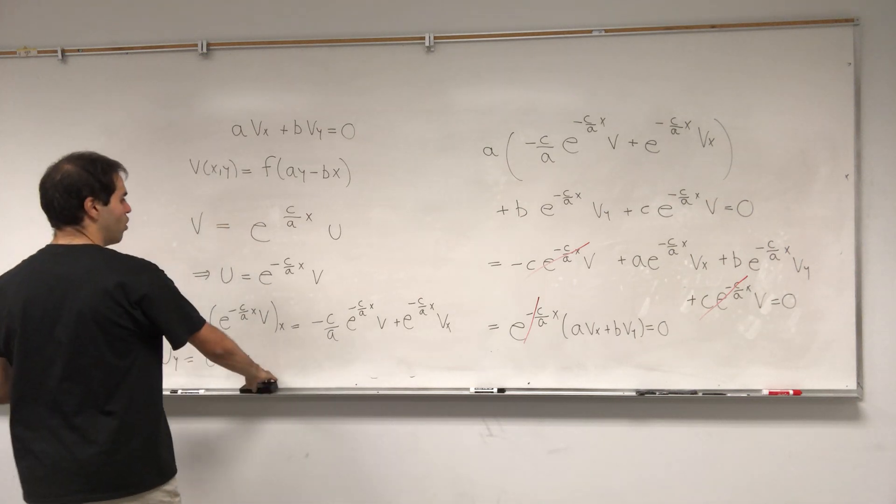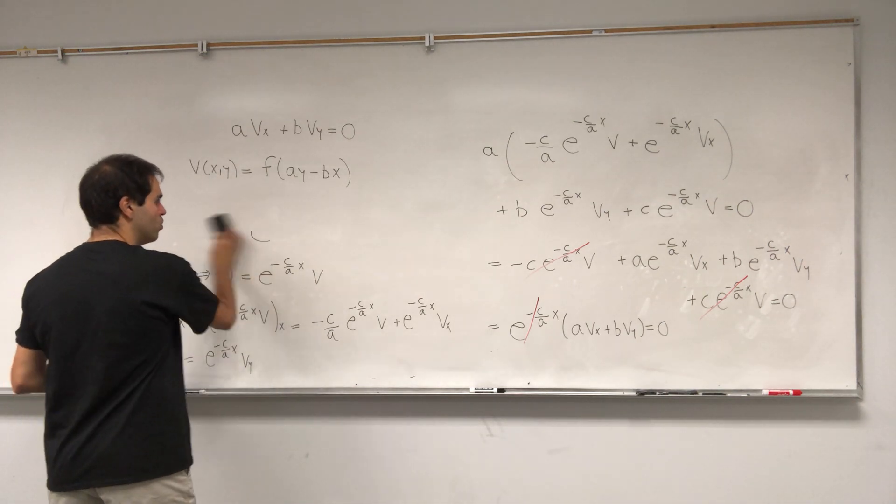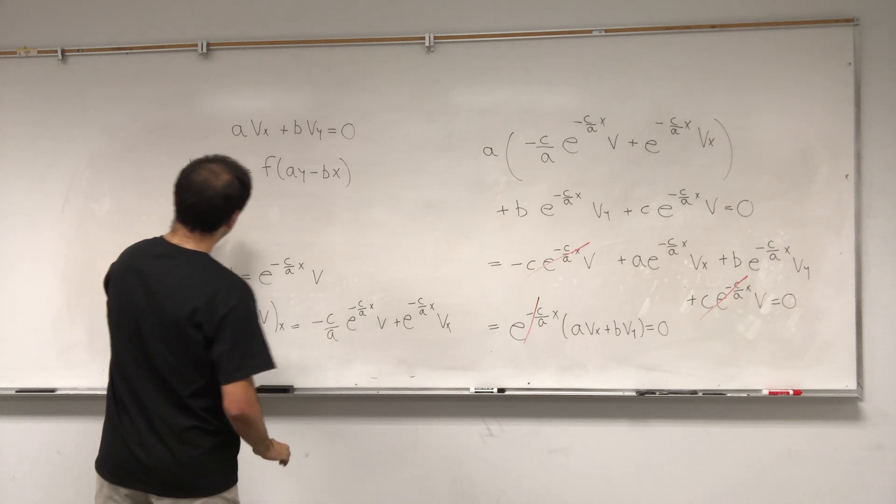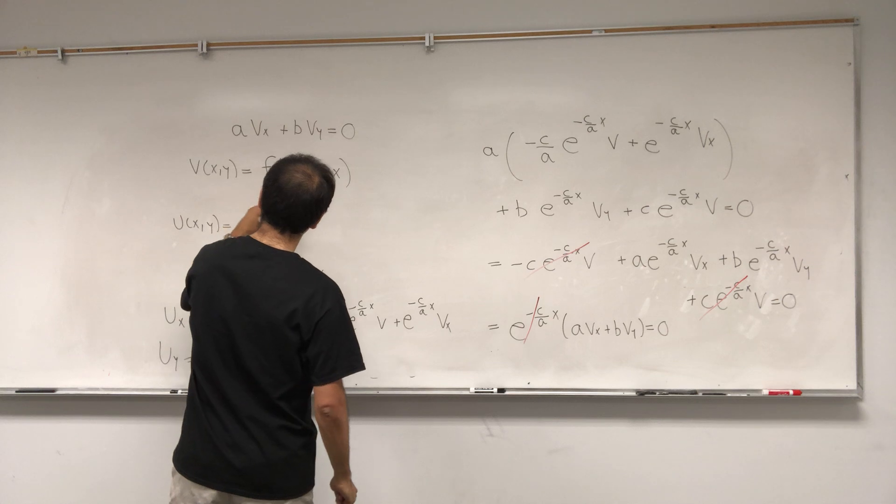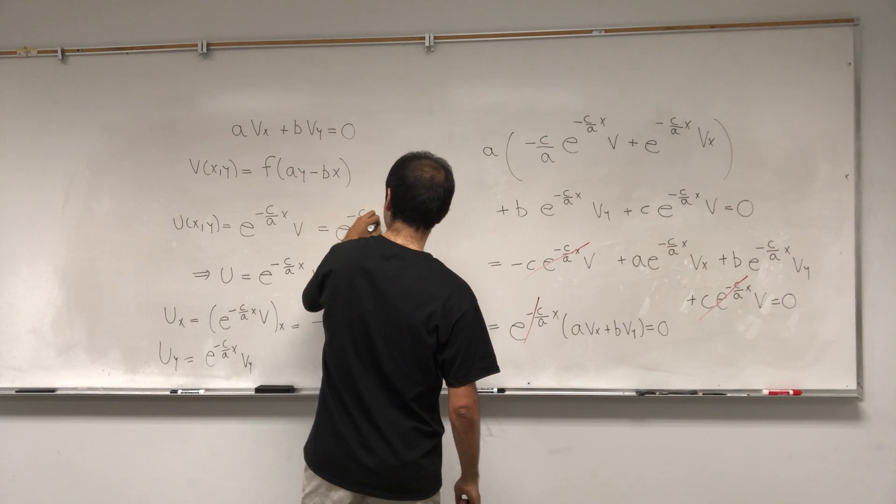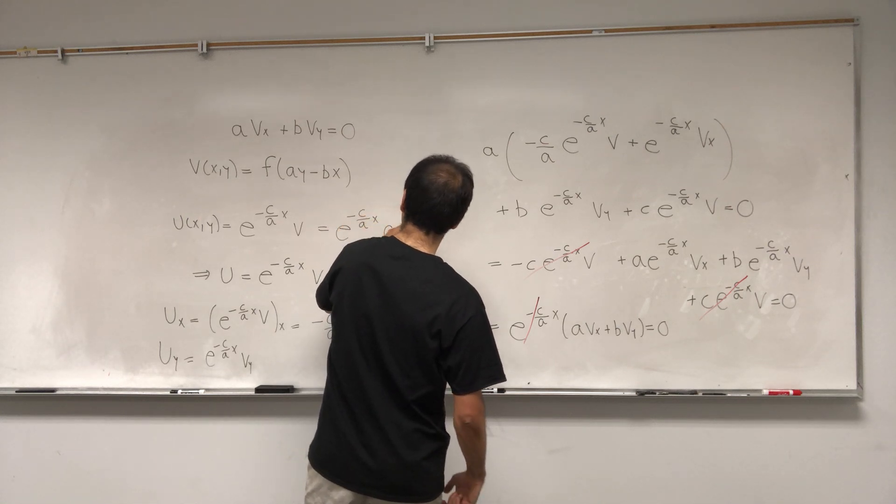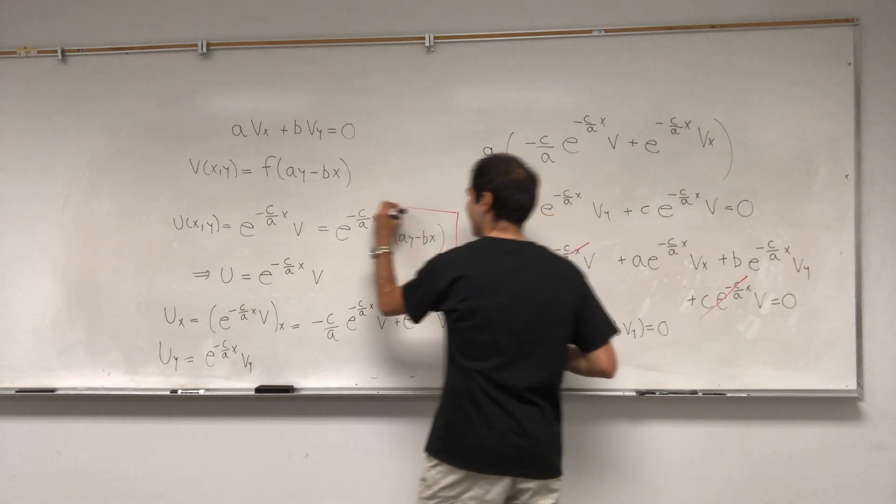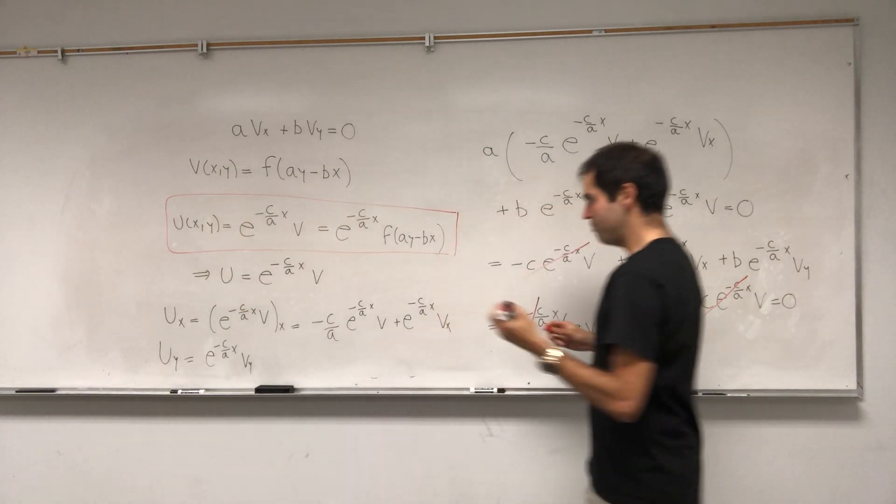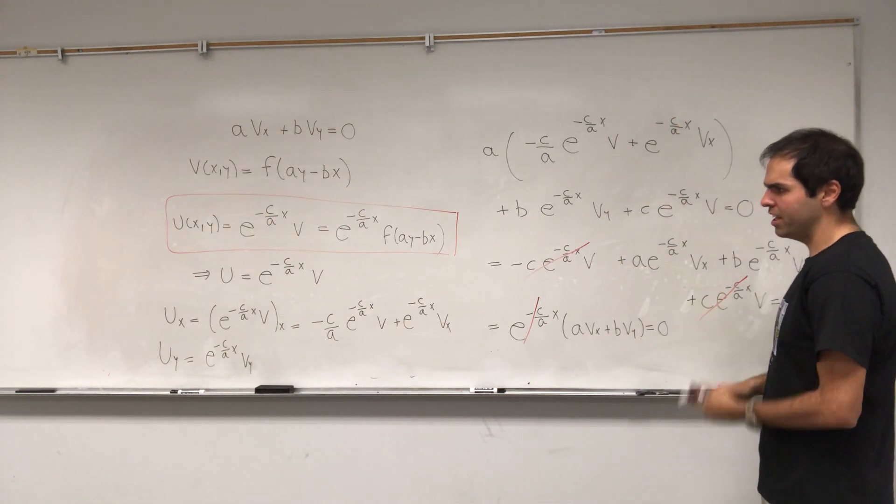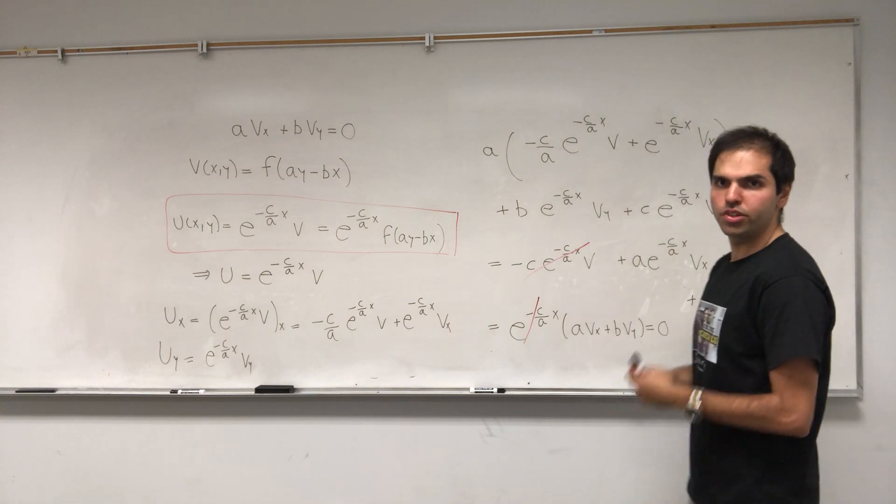And then lastly, we just need to solve for U. So then U, UXY becomes E to the minus C over AXV, and that's E to the minus C over AXF of AY minus BX. And ta-da!